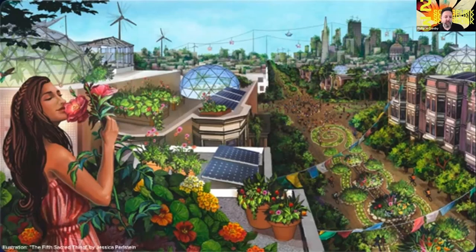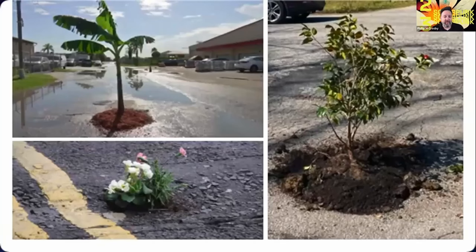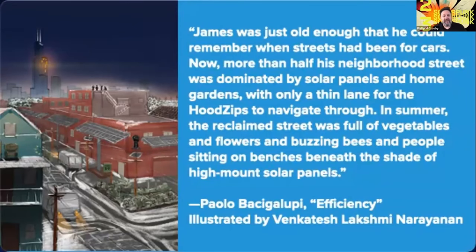Starhawk's version of San Francisco is a city powered by renewable energy, with streets reclaimed for gardens and a mix of mass transit, bicycles, small electric vehicles, and horses. In her description, Starhawk is at least referencing if not altogether borrowing from the world created by Ernest Callenbach in his book Ecotopia, from 18 years earlier, in which some streets have been replaced by creeks and no one worries about potholes because they are filled with flowers — which has become a popular form of protest against street disrepair, and I would suggest is an incredible form of solarpunk action we can all take.